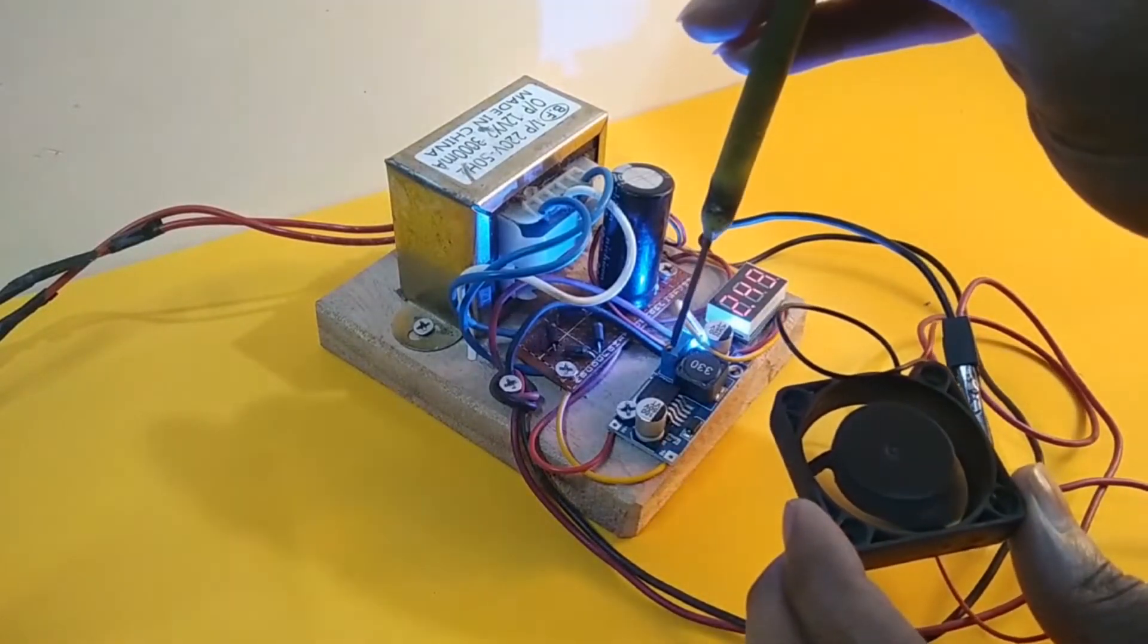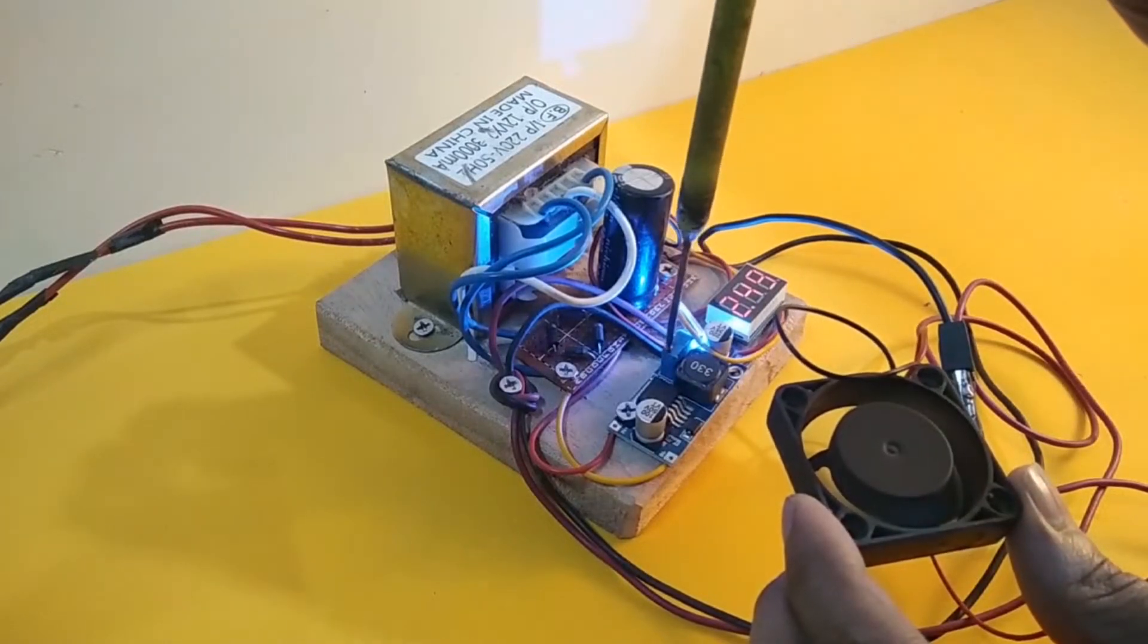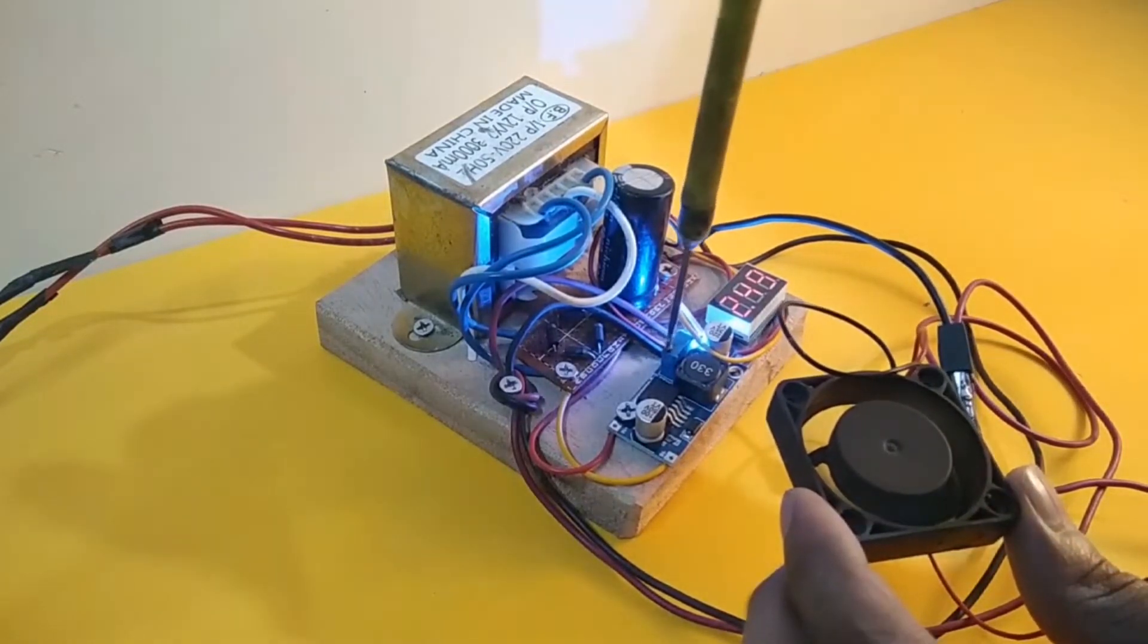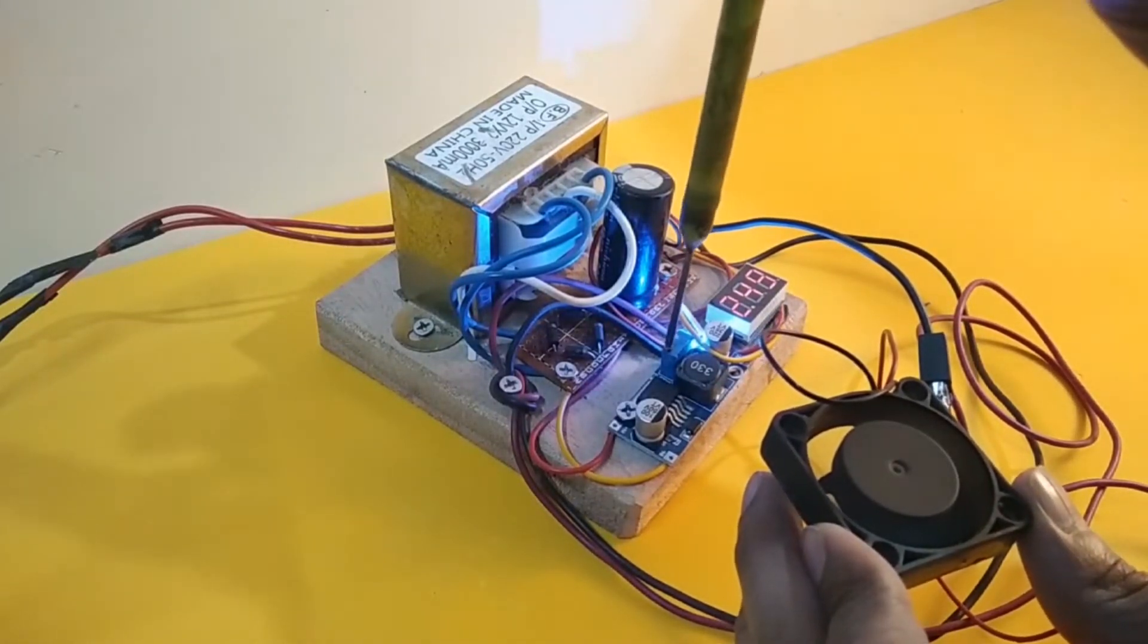When this variable resistance is rotated, the output voltage of this component or of this variable power supply will increase or decrease. You can easily make this for yourself.